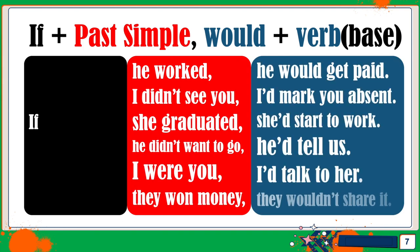If he worked, he would get paid. If I didn't see you, I'd mark you absent. If she graduated, she'd start to work. If he didn't want to go, he'd tell us. If I were you, I'd talk to her. If they wanted the money, they wouldn't share it.